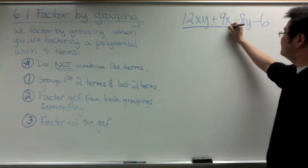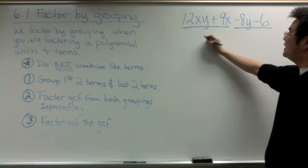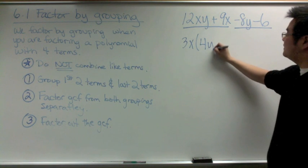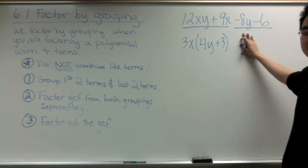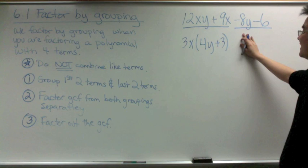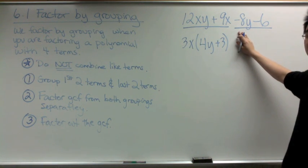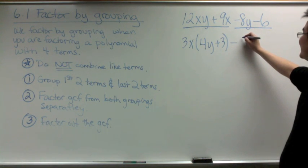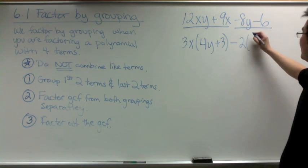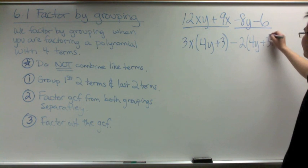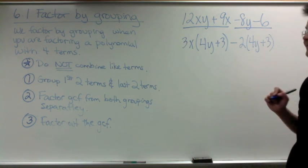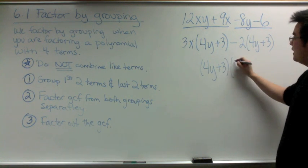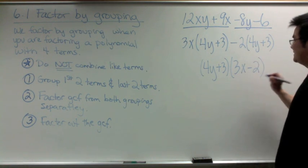We group the first two and the last two terms. The GCF of the first grouping is 3x, leaving 4y + 3. For the second grouping, we factor out a negative — when you have a negative sign in front of a binomial, you factor it out as part of the GCF. The GCF is −2, also leaving 4y + 3. We then factor out the common GCF (4y + 3), and what remains is (4y + 3)(3x − 2).